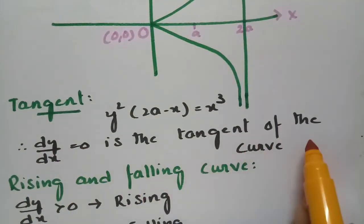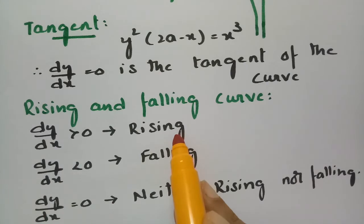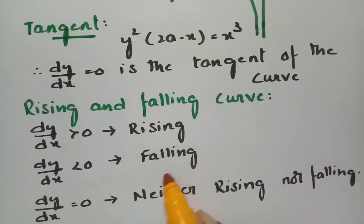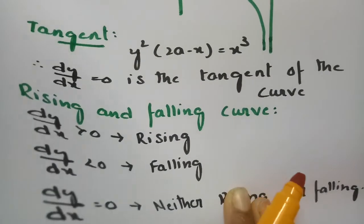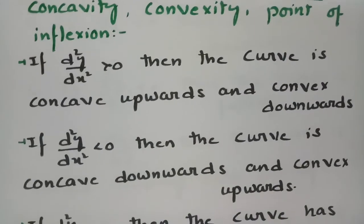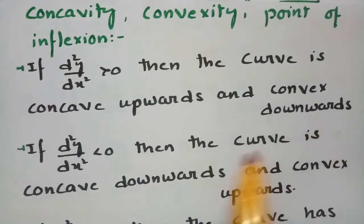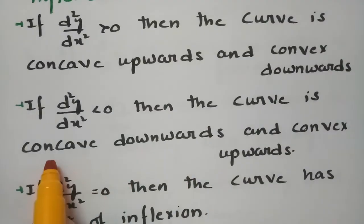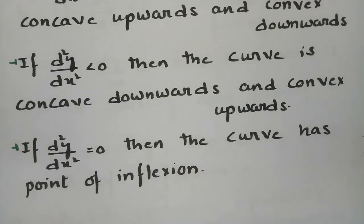The next step is the tangent: dy/dx = 0 gives the tangent of the curve. For rising and falling: positive derivative means rising, negative means falling, zero means neither. For concavity: if the second derivative is greater than 0 the curve is concave upwards; if less than 0 it is concave downwards; if equal to 0 the curve has a point of inflection.